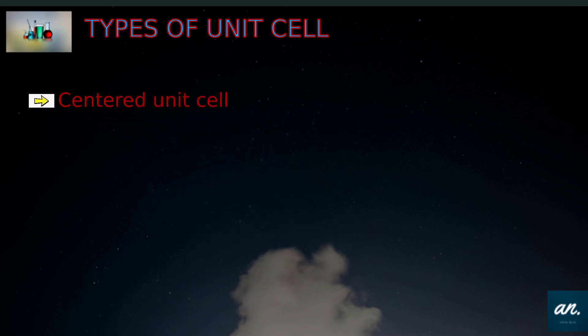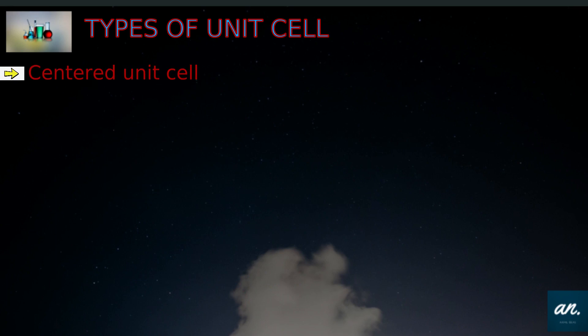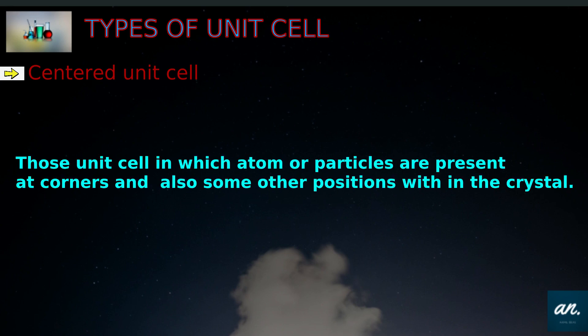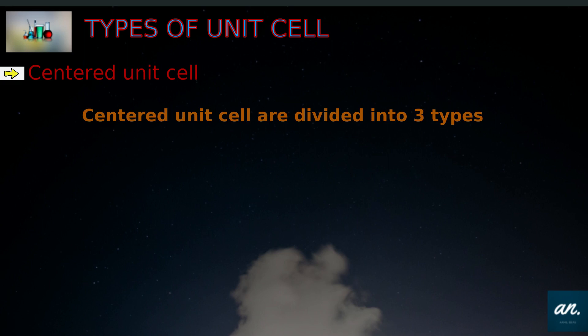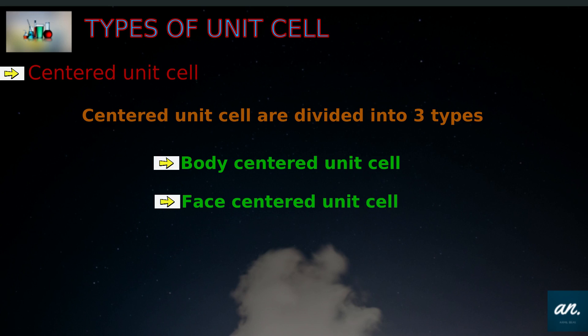The second type is the centered unit cell. Those unit cells in which atoms or particles are present at corners and also some other position within the crystal. Centered unit cells are divided into three types: body-centered unit cell, face-centered unit cell, and end-centered unit cell.